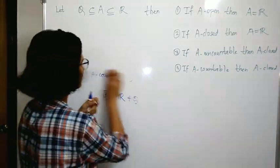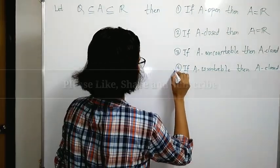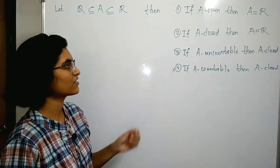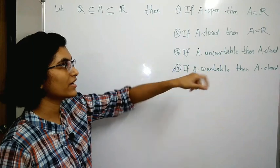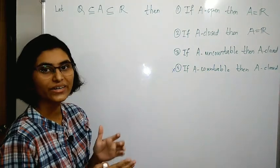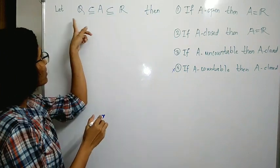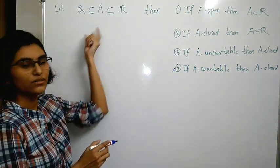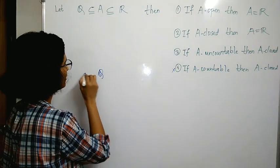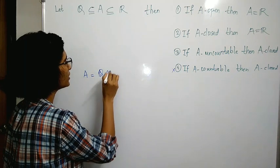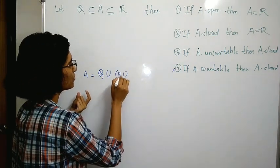Similarly we can discard the third option, but for that we require another counterexample. So let's construct a counterexample. A must be uncountable, so we can take A to be something involving an interval. We must also have Q as a subset of A, so let us take A to be Q union the open interval (0,1).